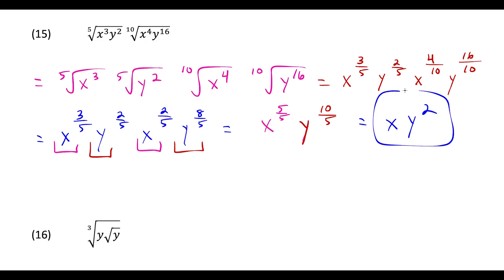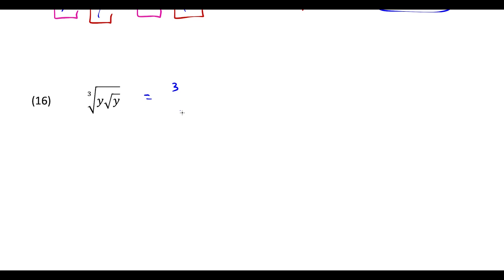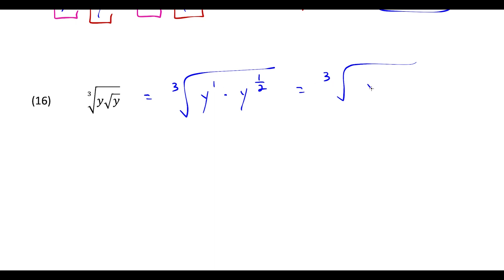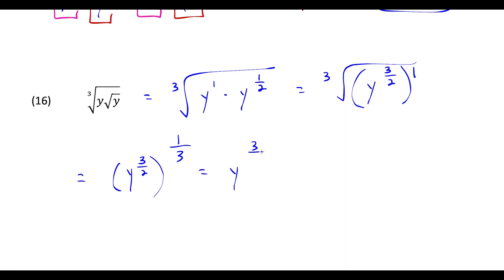For question 16, start from the inside out. Rewrite the inside as y times y^(1/2). Treating y as y^1, adding exponents gives y^(3/2). Now use the power over root definition: y^(3/2) raised to the power 1 over the root 3, meaning y^(3/2) raised to the 1/3. Multiplying exponents: 3/2 times 1/3 — the 3s cancel — giving y to the 1/2. That's our final answer.